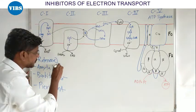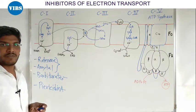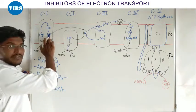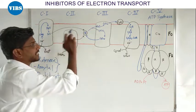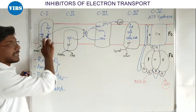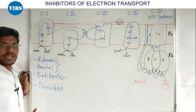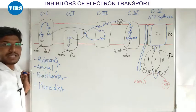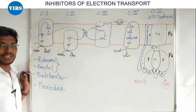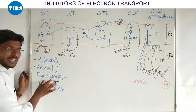Rotenone aur Amytal ka mode of action same hai. Humne dekha ki FES se electron ubiquinone ke paas jaate hai — lekin rotenone aur amytal kya karta hai, yeh joh step hai jahan electron FES se ubiquinone ke paas transport hote hai, is stage ko block karta hai. Ultimately complex I inhibit ho jaata hai aur electron transport inhibit ho jaata hai. Barbiturates kya karta hai — barbiturates directly complex I ko inhibit karta hai.